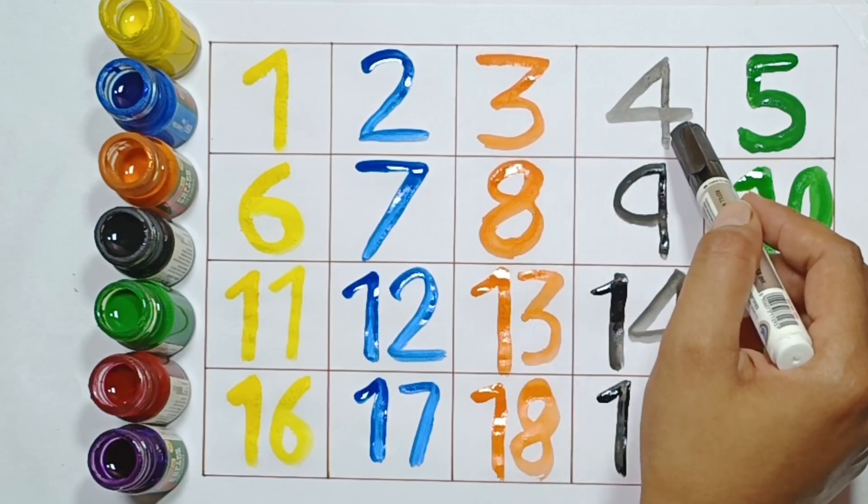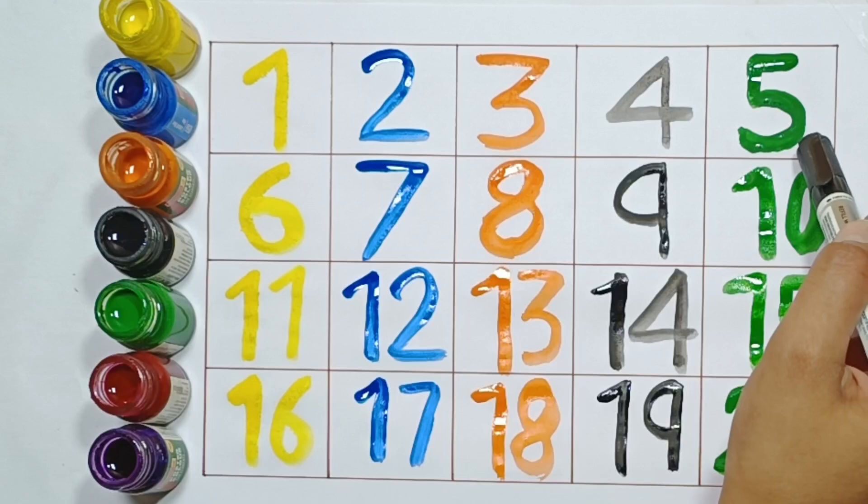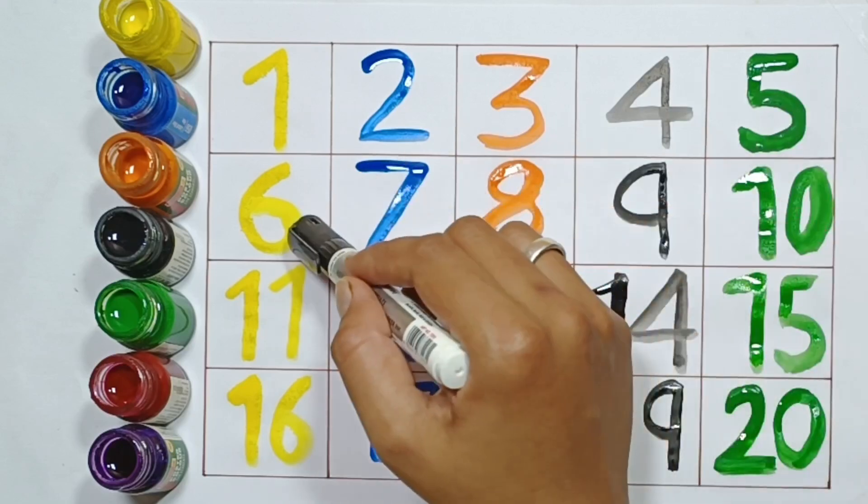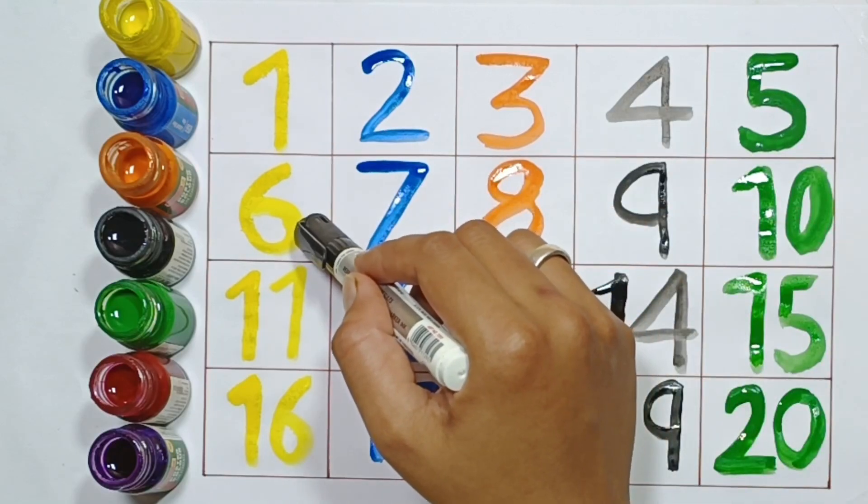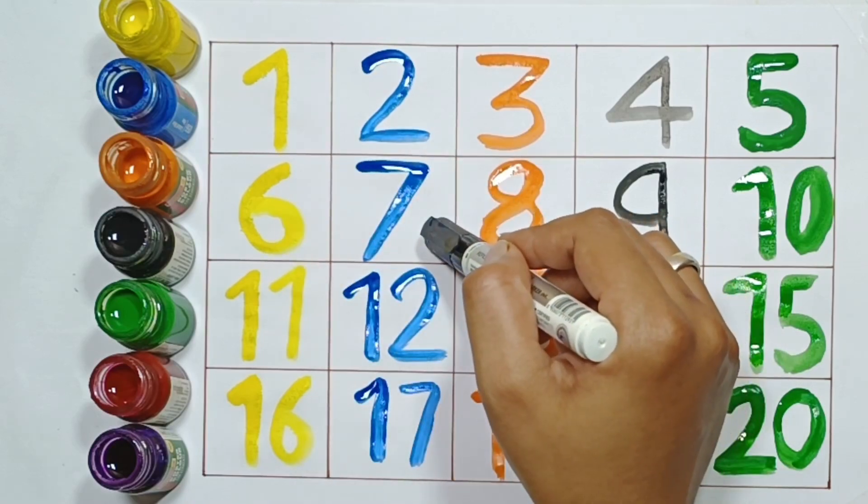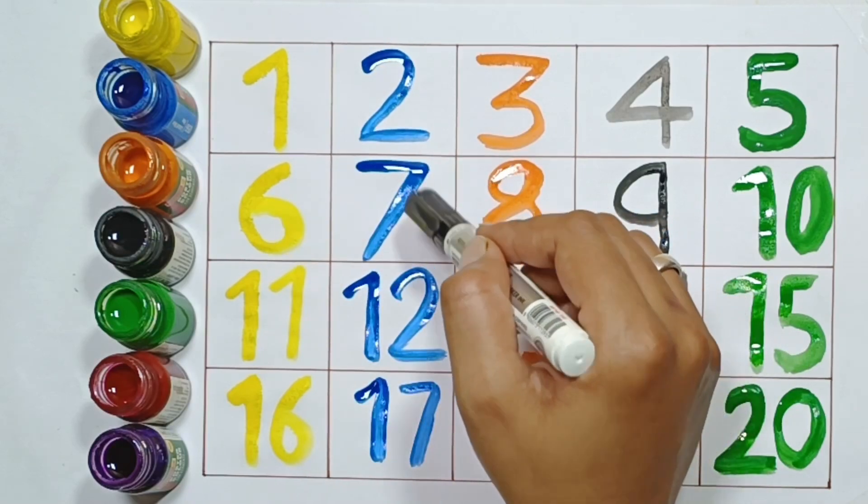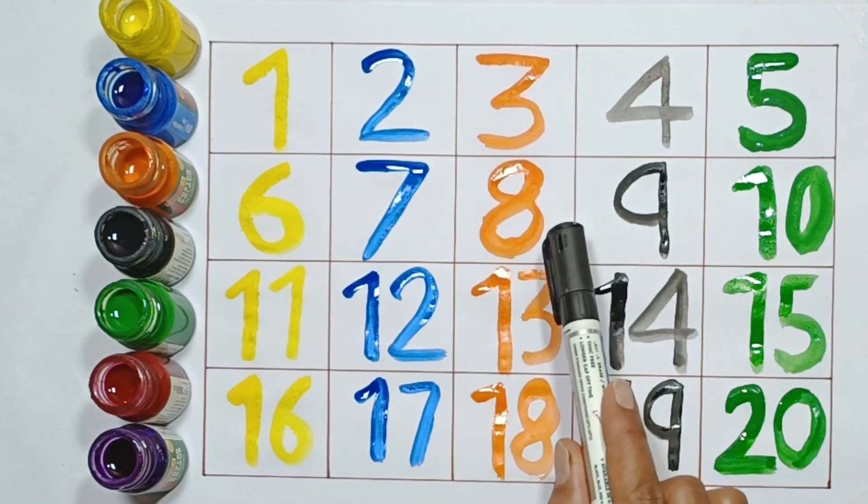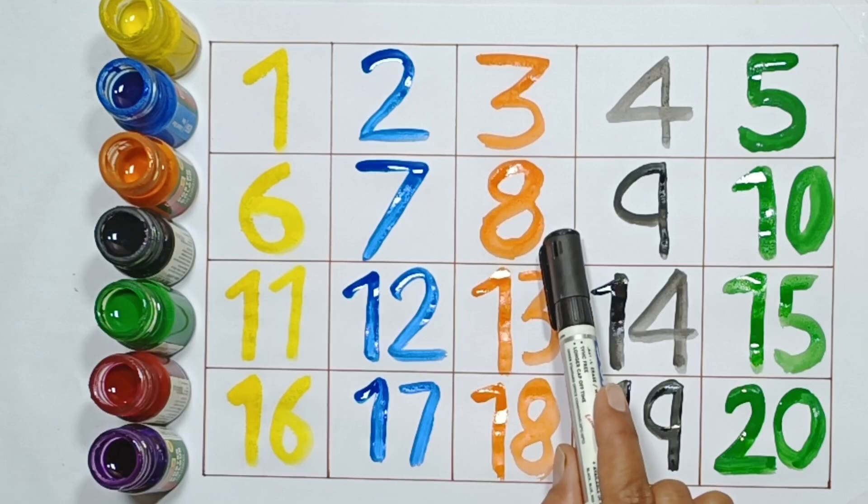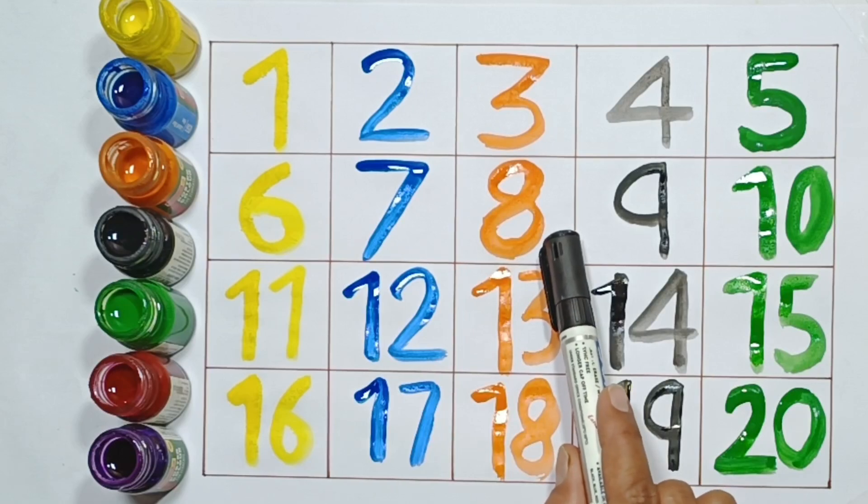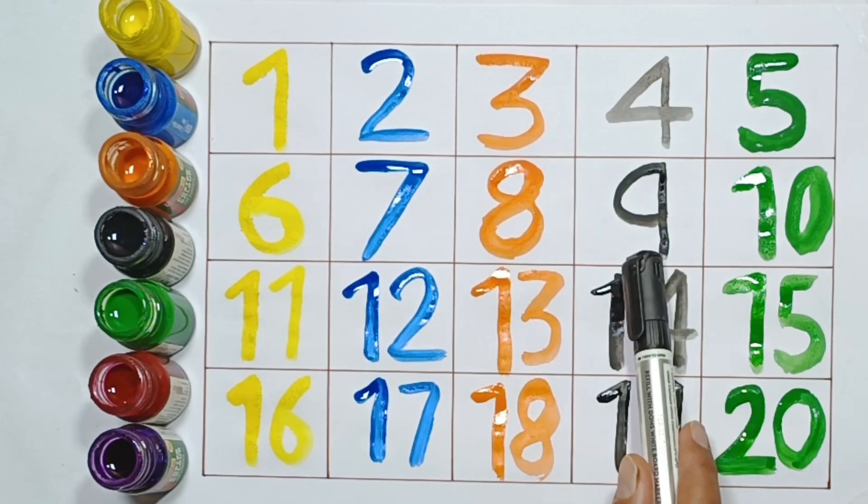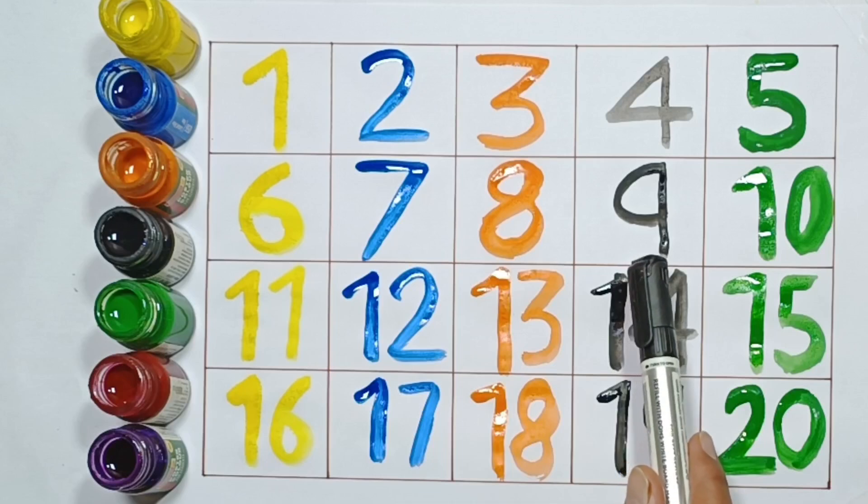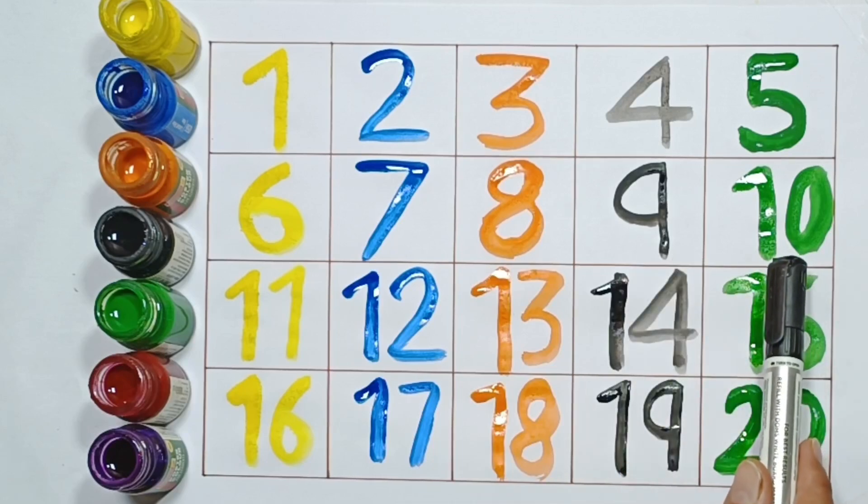3. 4. F-O-U-R. 4. 5. F-I-V-E. 5. 6. S-I-X. 6. 7. S-E-V-E-N. 7. 8. E-I-G-H-T. 8. 9. N-I-N-E. 9. 10. T-E-N. 10.